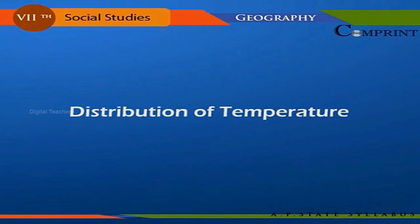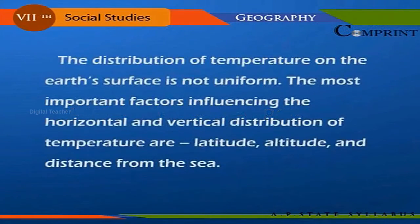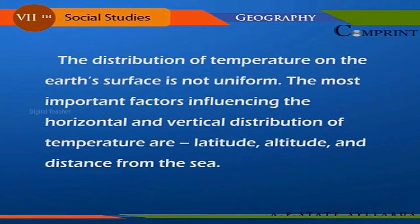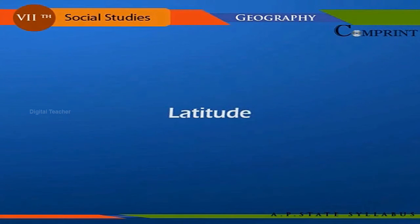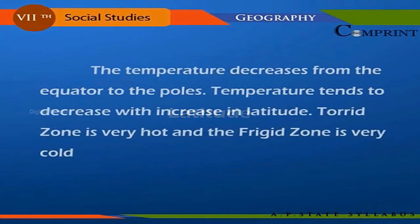The distribution of temperature on the earth's surface is not uniform. The most important factors influencing the horizontal and vertical distribution of temperature are latitude, altitude, and distance from the sea. Temperature decreases from the equator to the poles — temperature tends to decrease with increase in latitude.